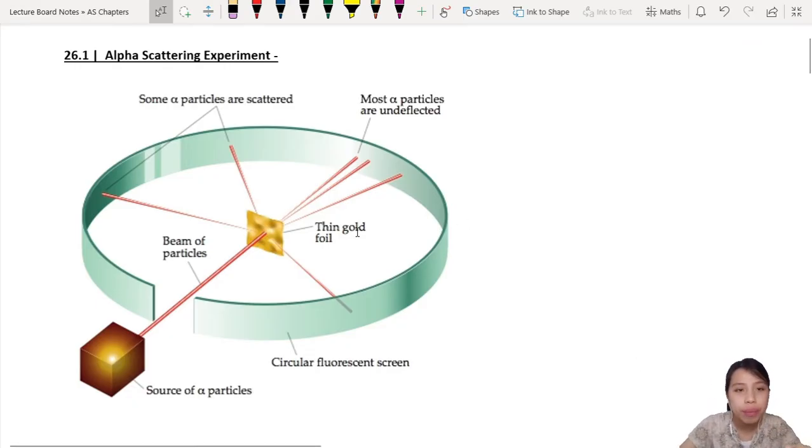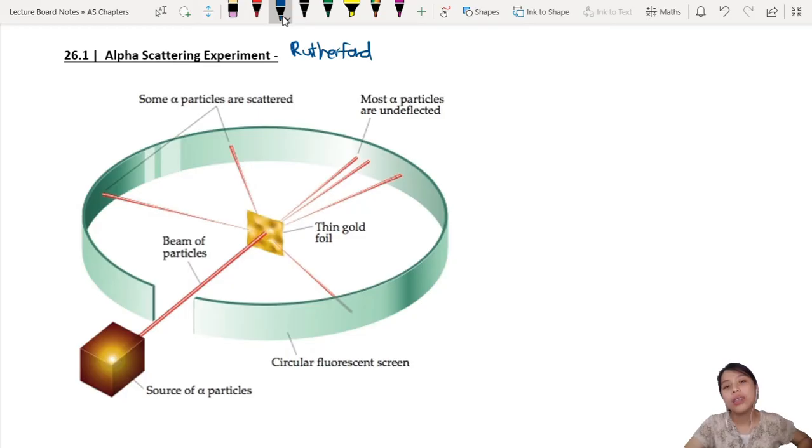Once upon a time there was this guy called Rutherford who did an experiment called the alpha scattering experiment, or the Rutherford experiment. You need to roughly know how this setup goes, so let's follow along.